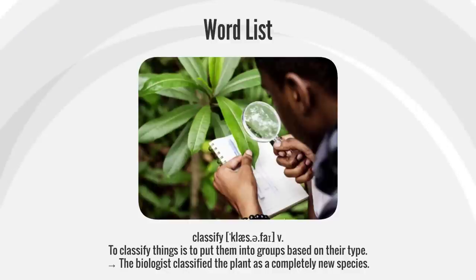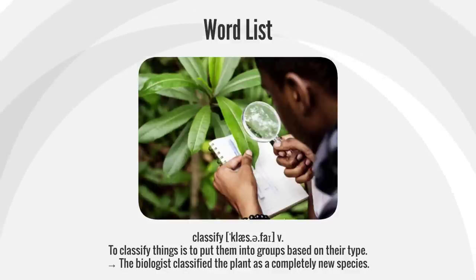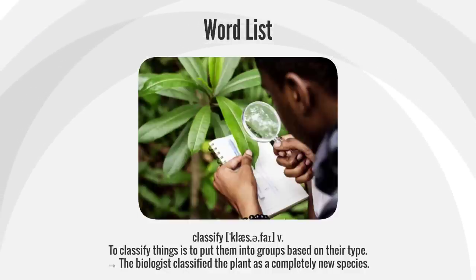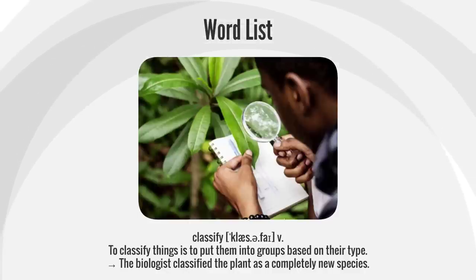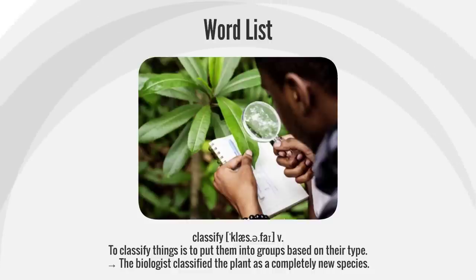Classify. To classify things is to put them into groups based on their type. The biologist classified the plant as a completely new species.